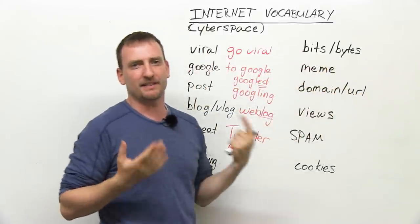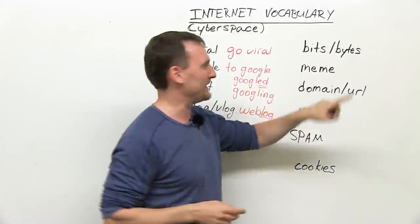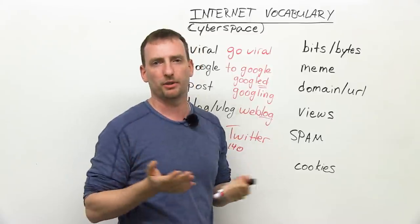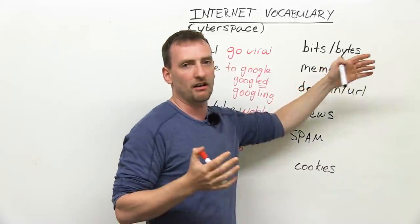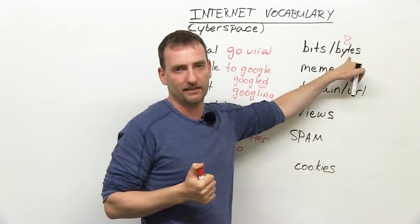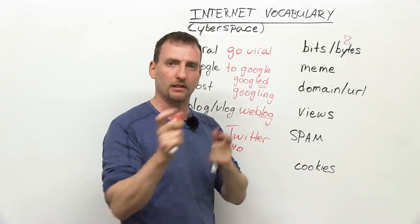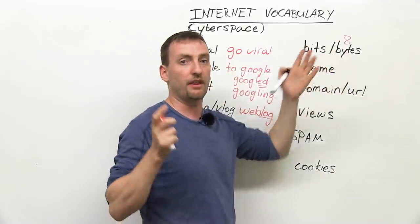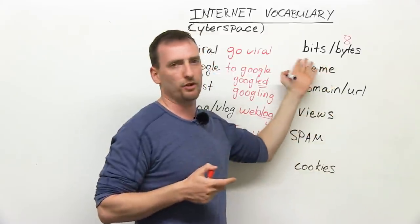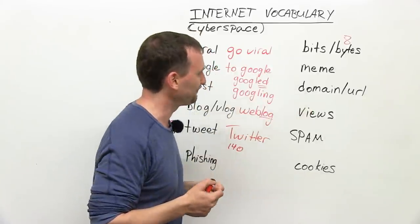Bits and bytes. One bit is a very small piece of information used in computer programming. Bytes are a collection of eight bits. Then you have kilobytes, which is basically a thousand bytes — a thousand twenty-four to be exact, but around a thousand. Kilo means thousand. Megabytes are a thousand kilobytes. Gigabytes are a thousand megabytes. And then, of course, you have terabytes, which are a thousand gigabytes. Lots of bytes, lots of bits, lots of information.